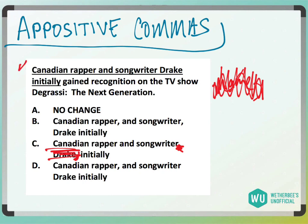If I said 'a Canadian rapper and songwriter initially gained recognition,' that would be fine, but the 'a' is not there, so I couldn't say 'Canadian rapper and songwriter initially gained recognition.' So answer choice C is gone.